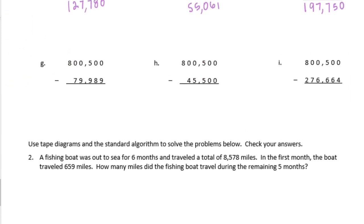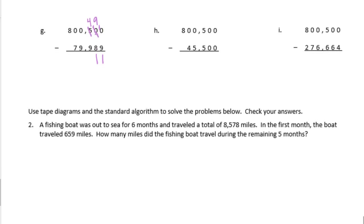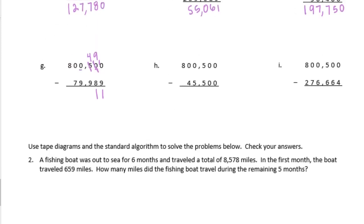G. 0 minus 9 we can't do it. But I can't borrow from this 0 because there's nothing to borrow, so I need to go all the way to the 5 and make it a 4. Then this becomes 10, but I still need to borrow 1 from it, so I'm going to make it 9. Now that becomes a 10. So 10 minus 9 is 1. 9 minus 8 is 1. 4 minus 9 — we can't do — so I need to go all the way over to the 8, make it a 7. This becomes 10, but I need to borrow from there too. Bring it all the way back, make it a 14. 14 minus 9 is 5. 9 minus 9 is 0. 9 minus 7 is 2. And 7 minus nothing is 7. We get 720,511.